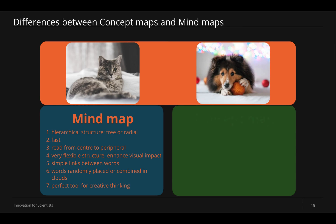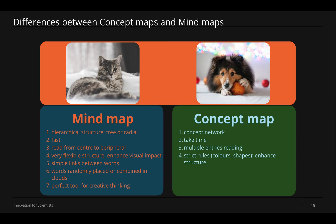Regarding the concept map: it's mostly based on a network of concepts. It takes time to build a real concept map. It does not use a radial or tree-like structure with a central topic. The concept map is built for multiple-entry reading. Strict rules are followed — like colors and shapes. The goal is to highlight the sequence of actions and ensure everything will be done on time. Connections between nodes contain action verbs, and there is a strict hierarchical structure. Concept maps are the perfect tool for rational analysis.